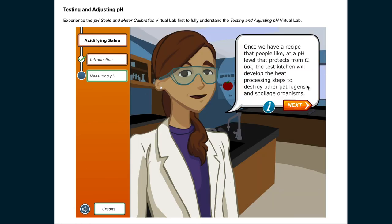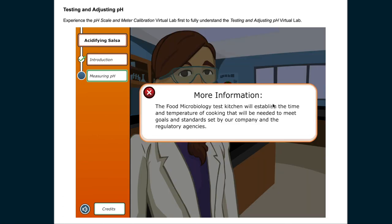Once we have a recipe that people like, at a pH level that protects from CBOT, the test kitchen will develop the heat processing steps to destroy other pathogens and spoilage organisms. The Food Microbiology Test Kitchen will establish the time and temperature of cooking that will be needed to meet goals and standards set by our company and the regulatory agencies.